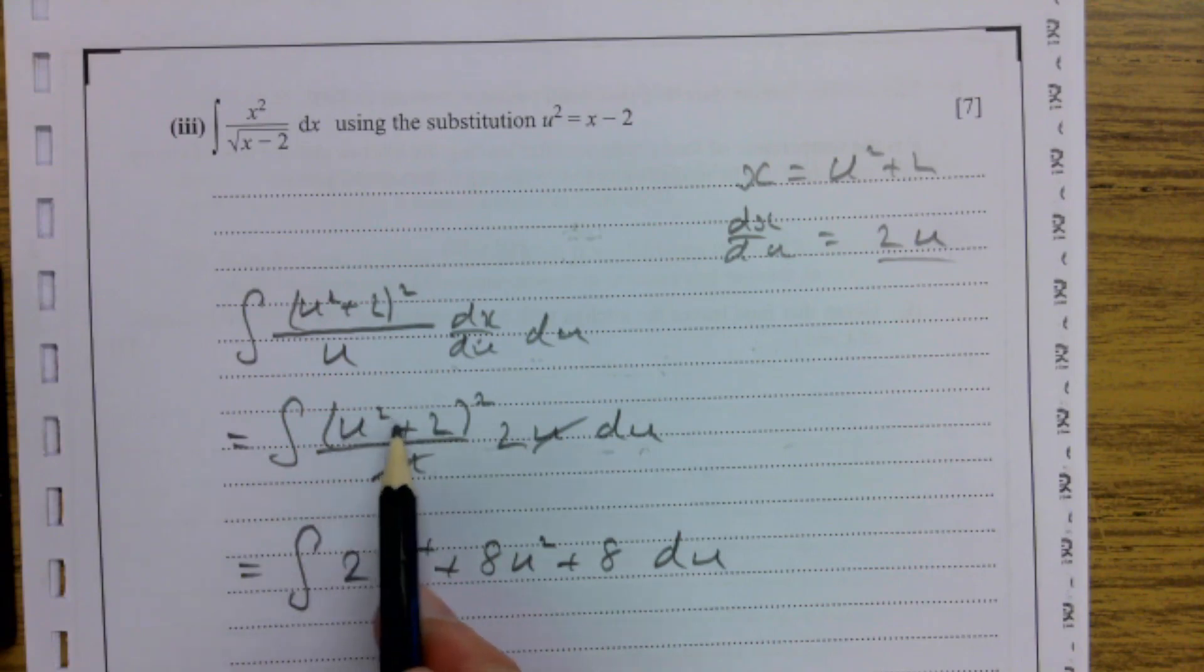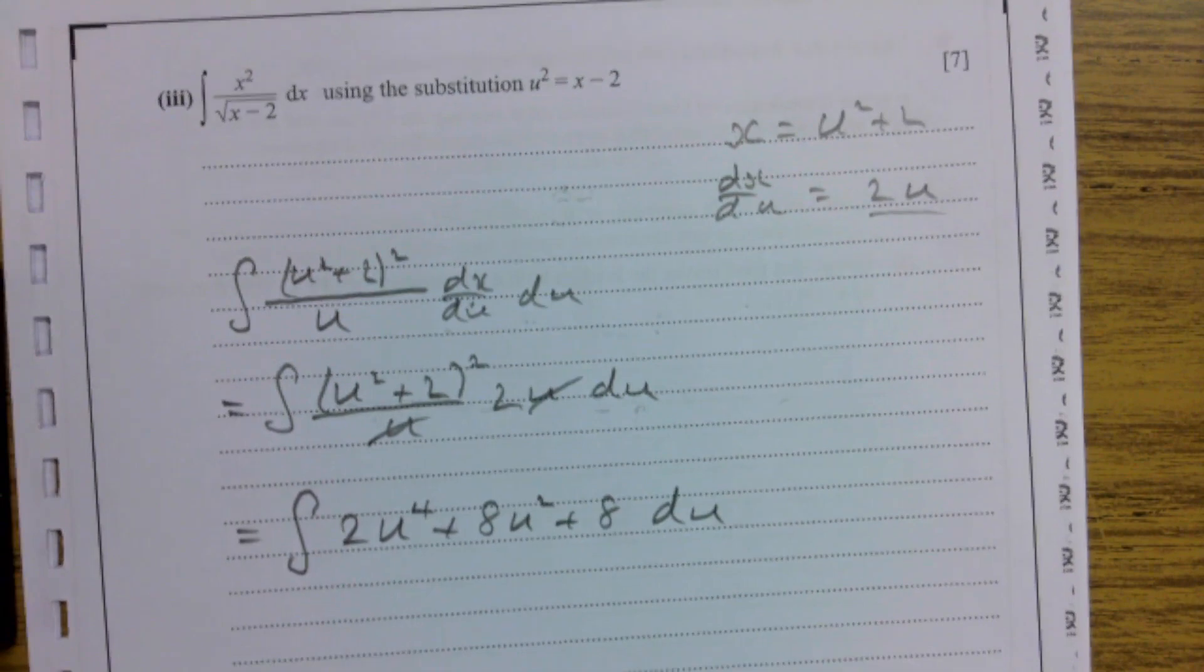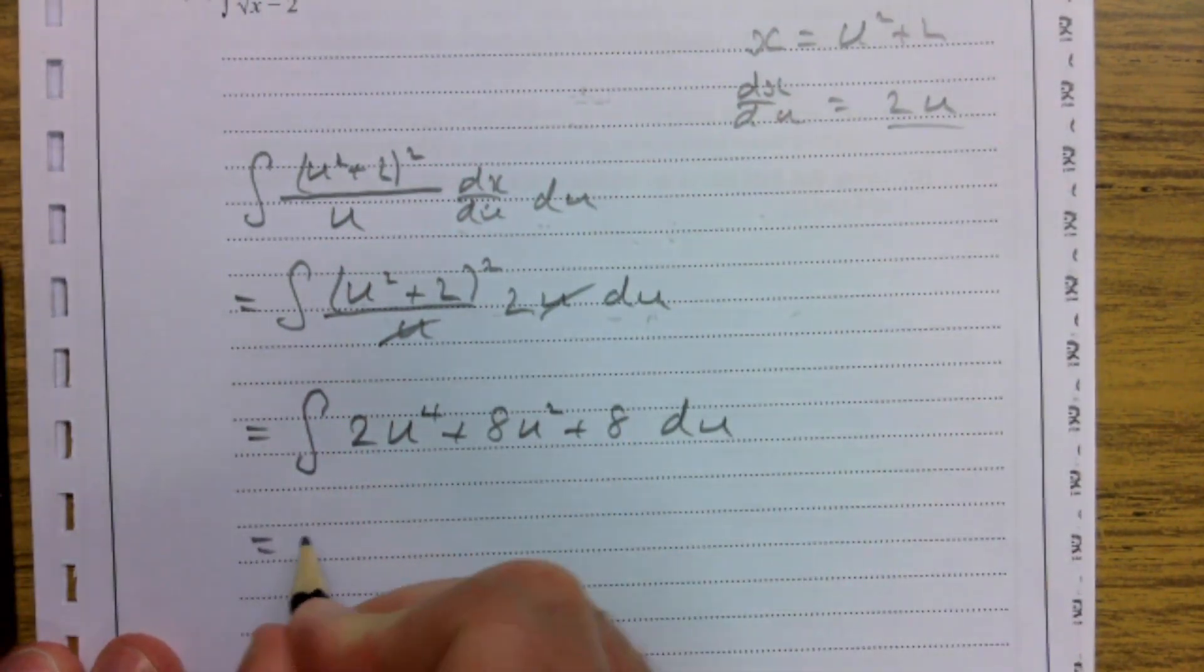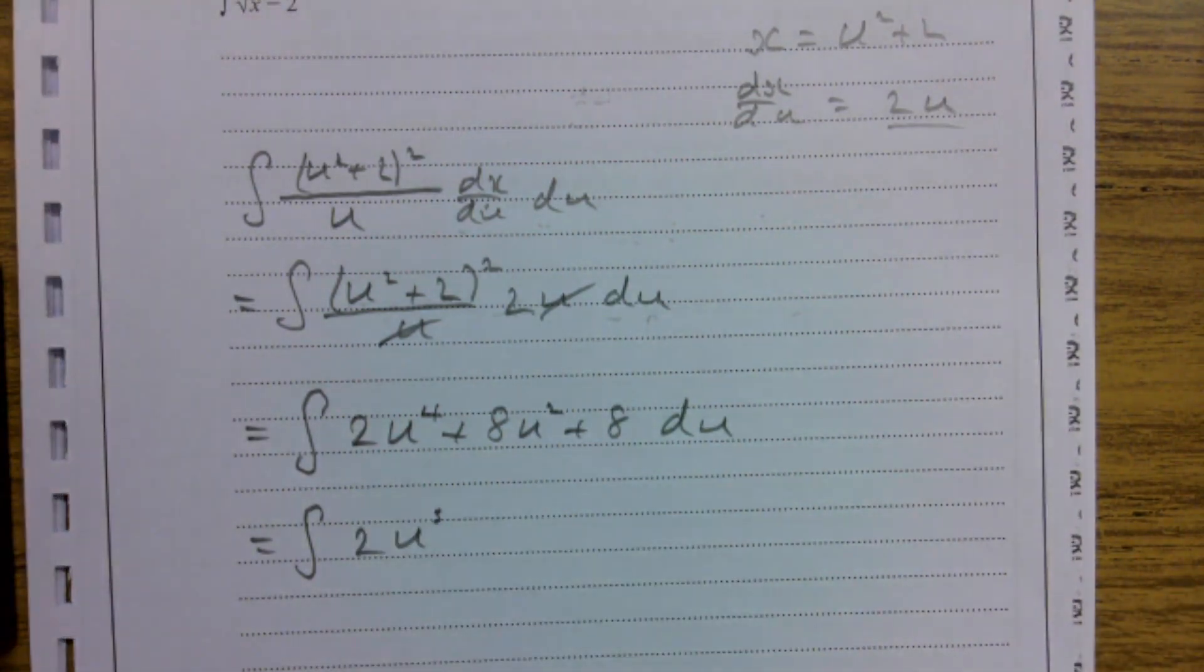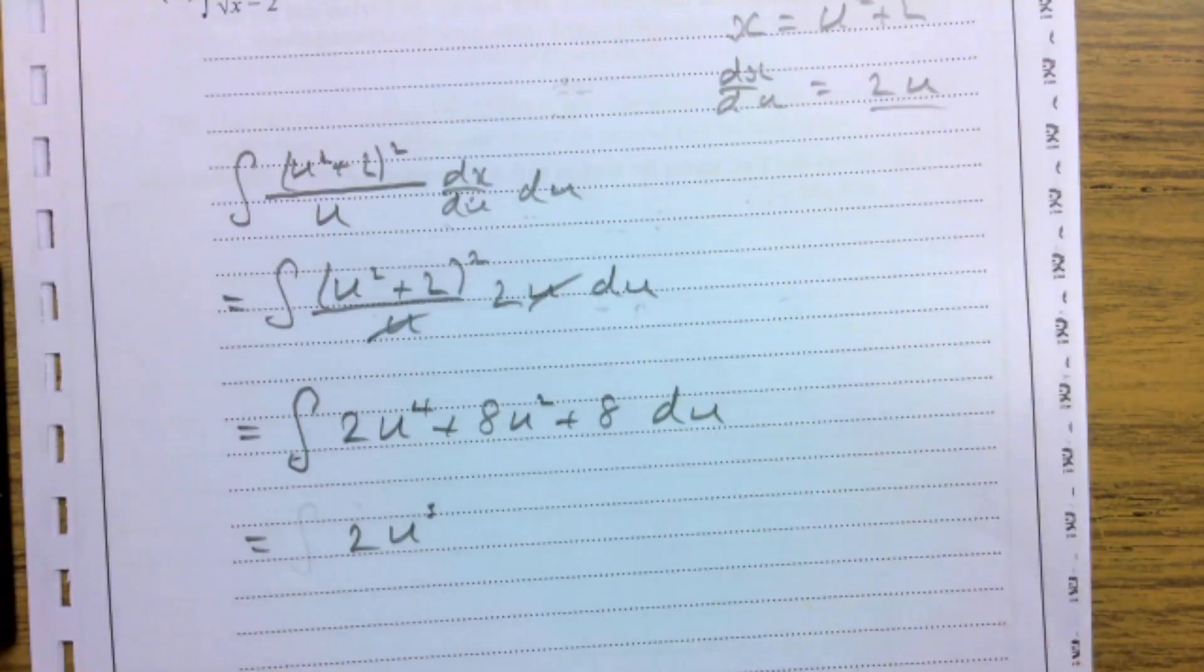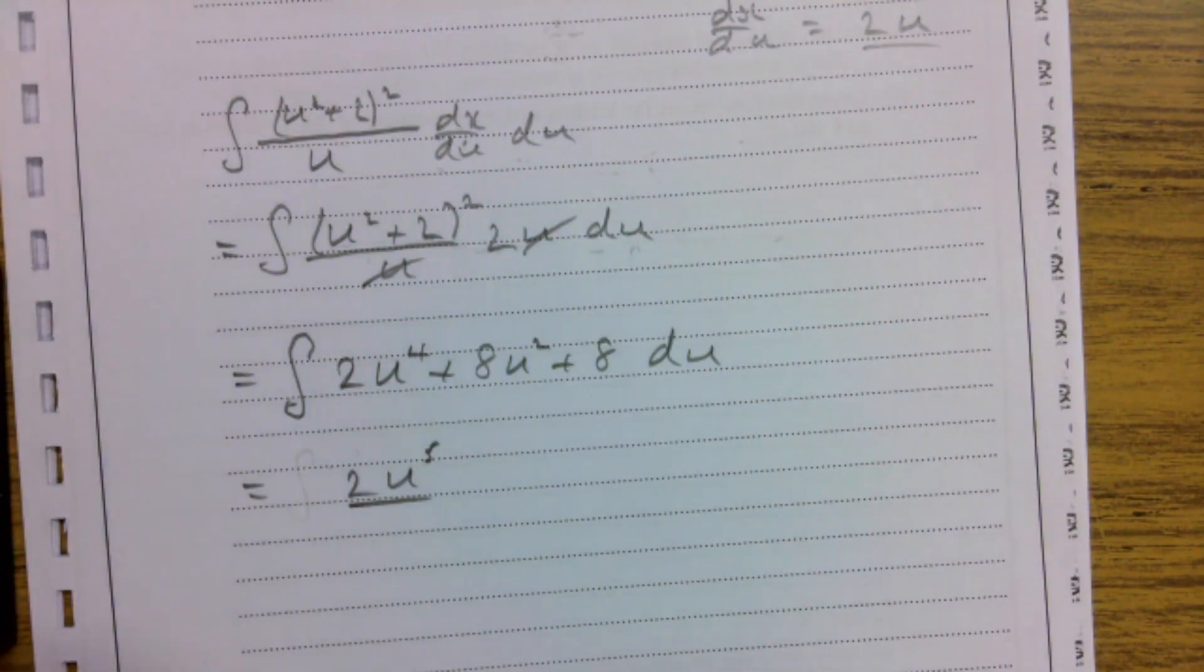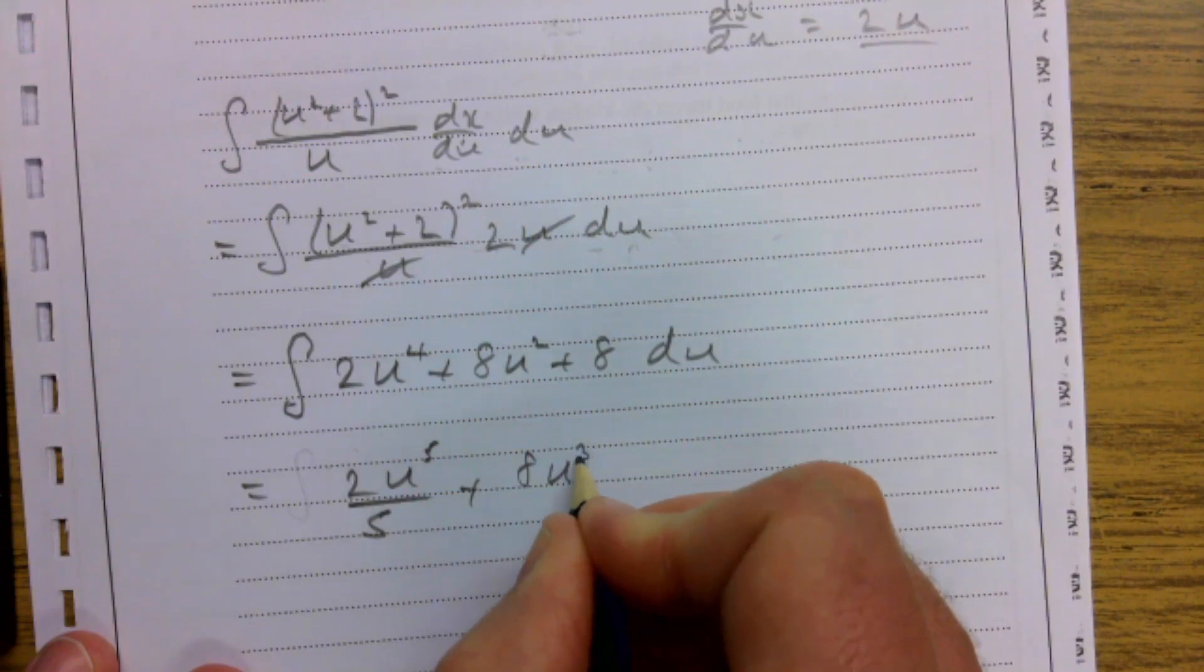So you see what I've done there. I've put the two brackets u squared plus 2 upon u squared plus 2, once I multiply that out and times everything by 2, we've ended up with that. We can now integrate, this is dead straightforward for us to integrate. Add 1 to the power, so that's a 5 and divide by the new power which is 5, plus 8u add 1 to the power divide by the new power which is 3, plus 8u plus c.